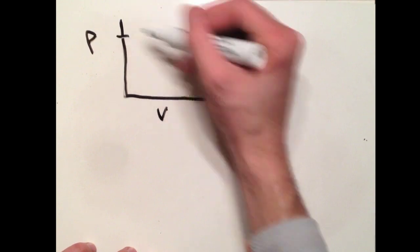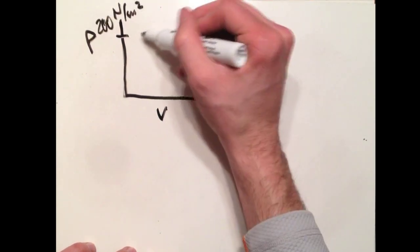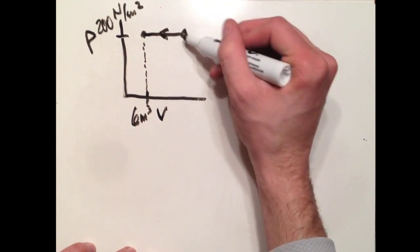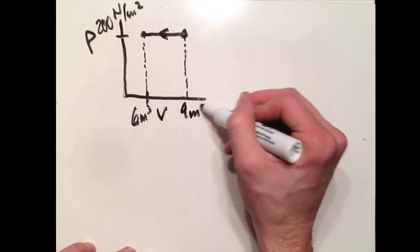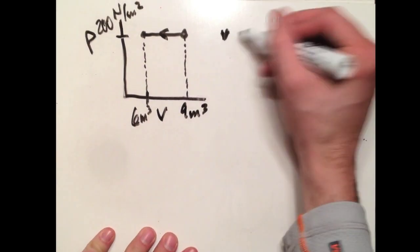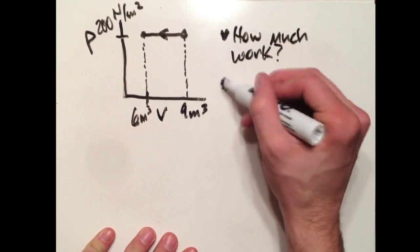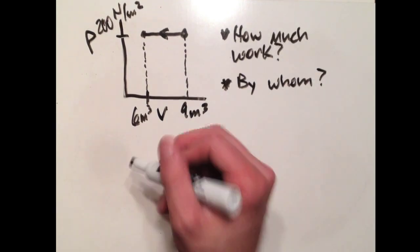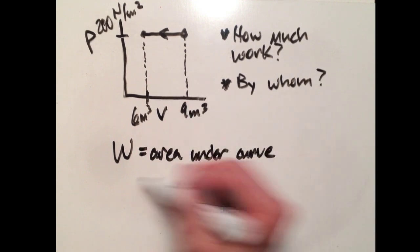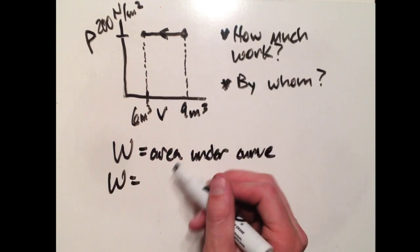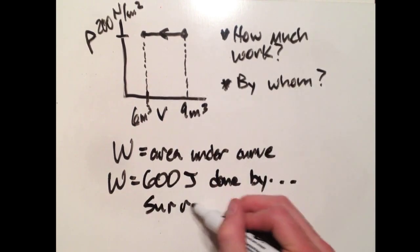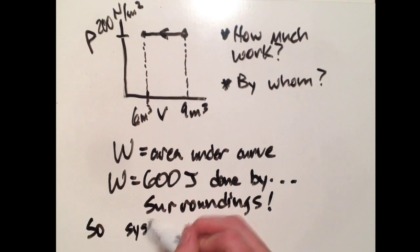Let's look at another isobaric process on a PV diagram. Let's say that my pressure is 200 newtons per square meter or 200 pascals. Let's say I'm going from A to B or I'm going from 9 meters cubed to 6 meters cubed. How much work was done and by what? The system or the surroundings? I'll give you a second to work this out.